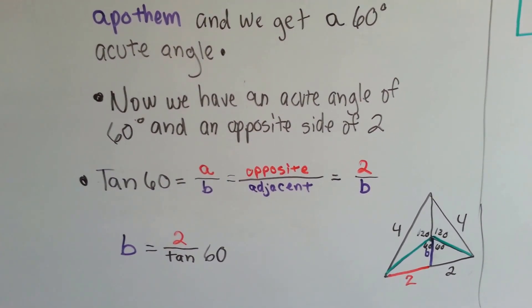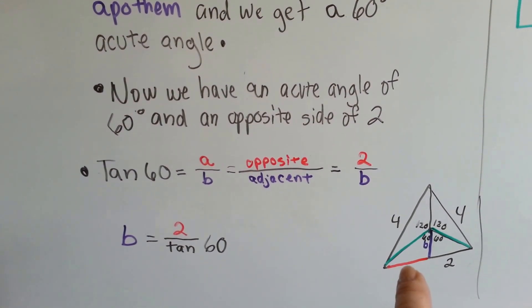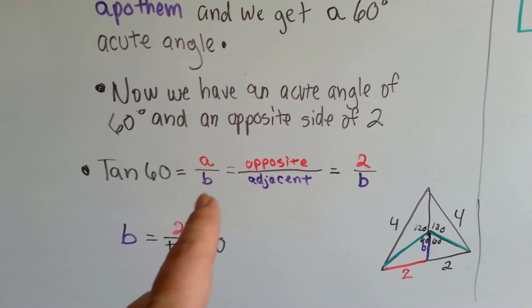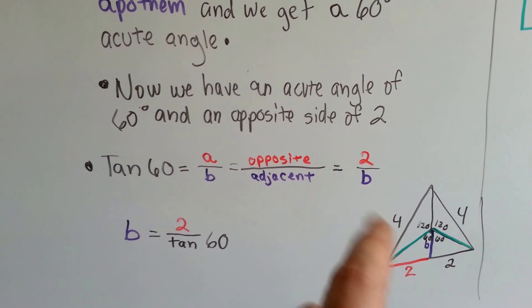Now, we have an acute angle of 60 degrees. We have an opposite side of 2. So we can say tangent 60 is equal to a over b, which is the opposite over the adjacent, which is equal to 2 over b. All right? 2 over b.